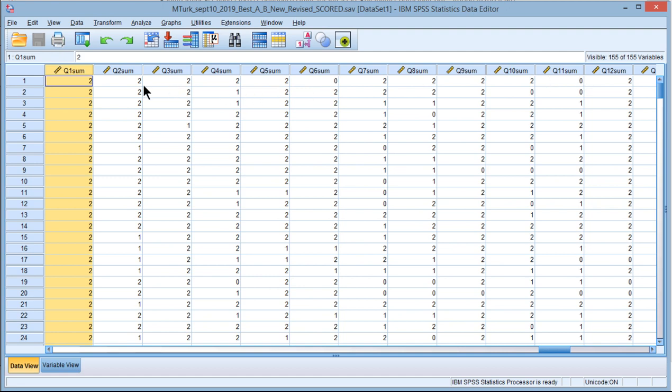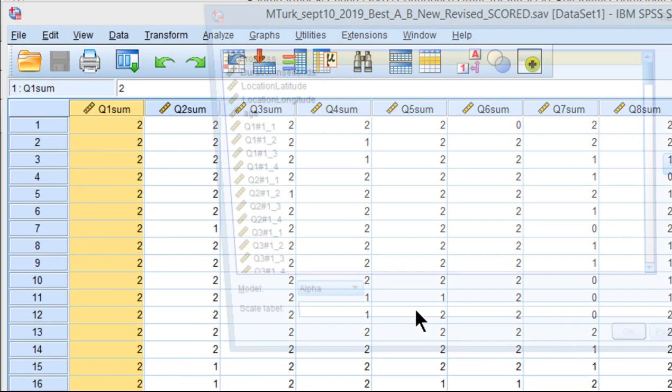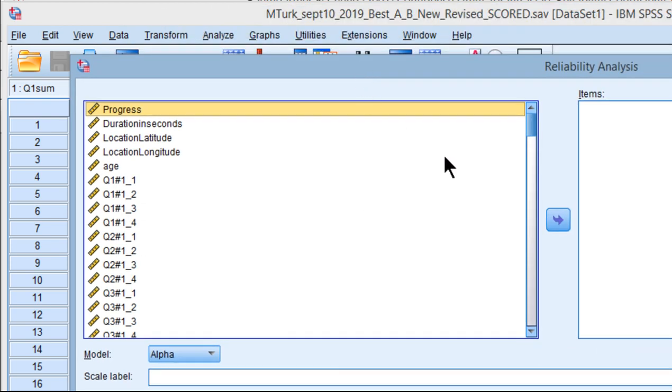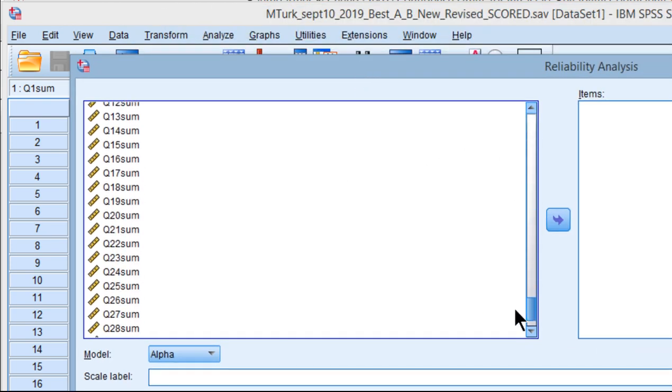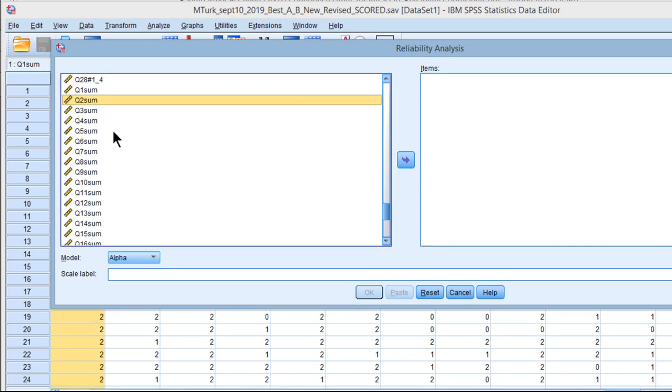So in order to get the estimate of coefficient alpha or Cronbach's alpha, go into Analyze, Scale, Reliability Analysis, and then place the Variables of Interest into the Items box. This is just a regular approach to getting reliability that you would normally use.